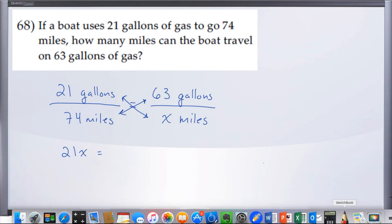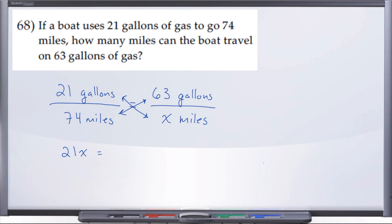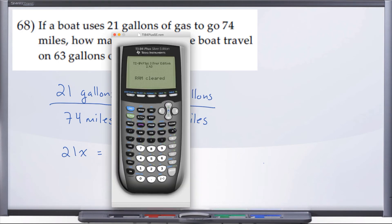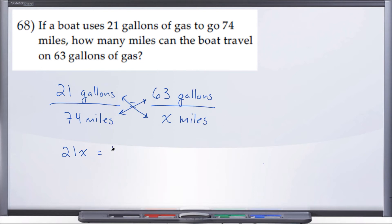I'm not sure, let's go ahead and pull up our trusty calculator here. So we have 63 times 74, it's going to give us 4662. And when we divide by 21 on both sides, we're going to have X equals 222 miles, I believe.